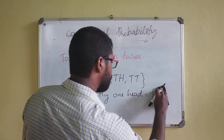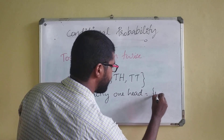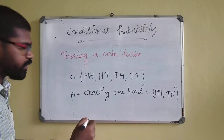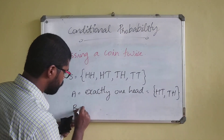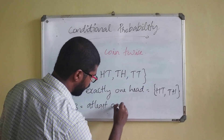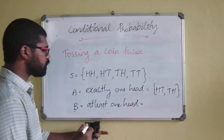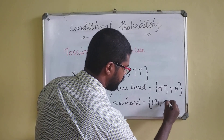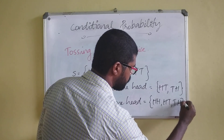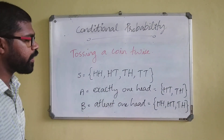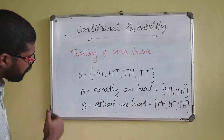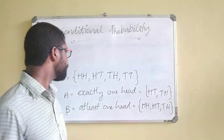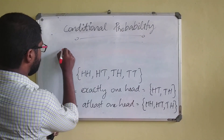Let event A be exactly one head, so A contains head-tail and tail-head. Let event B be at least one head. So B contains head-head, head-tail, and tail-head. So event A is exactly one head: {HT, TH}, and event B is at least one head: {HH, HT, TH}.